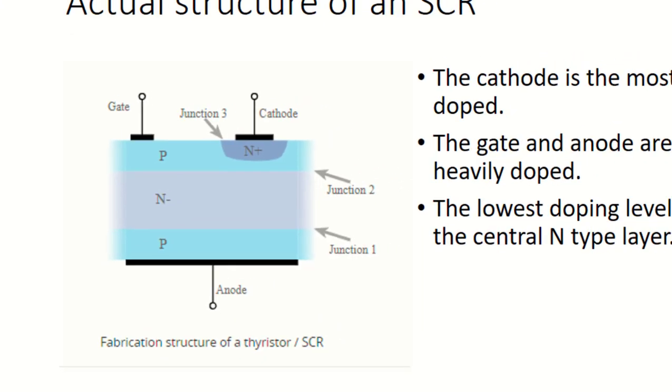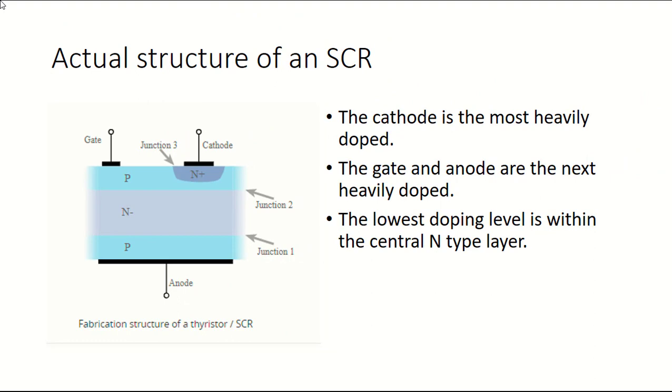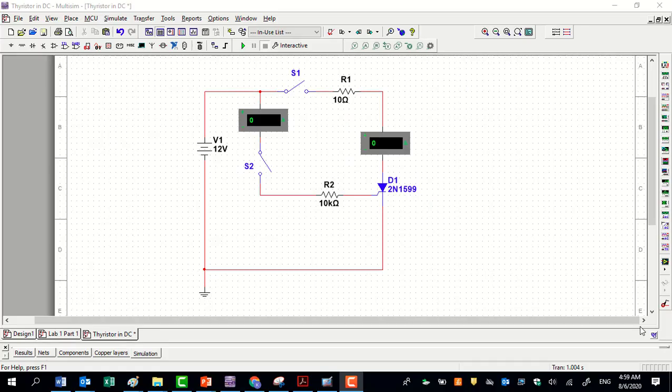The cathode is the most heavily doped layer. The gate and anode are the next heavily doped layers. The lowest doping level is within the central N-layer.